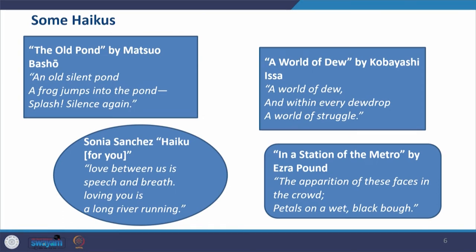Ezra Pound, in his haiku titled 'In a Station of the Metro,' says: 'The apparition of these faces in the crowd.' The last line appears like falling petals and provides meaning that conveys a lot. Time does not permit us to take more examples, but let me tell you who are the famous Indian English poets who have tried their hands at haiku writing.